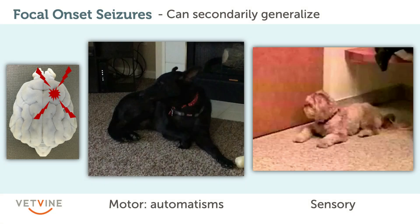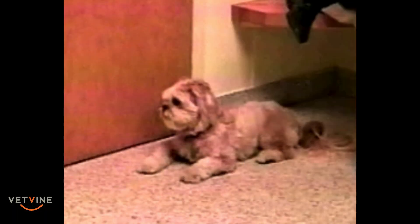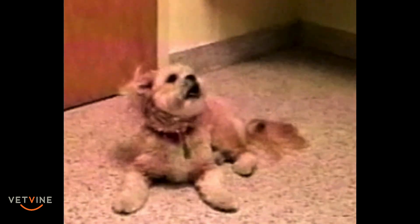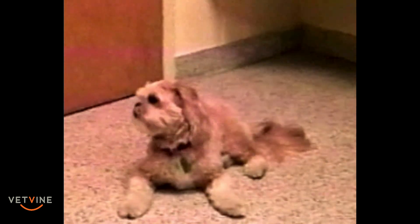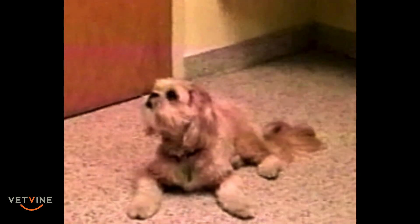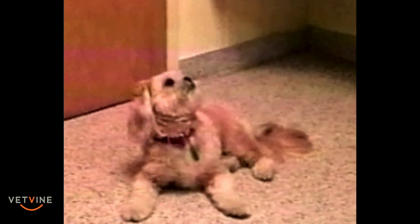This is what we would consider a sensory seizure. This animal we believe is having episodes perhaps because it's experiencing visual hallucinations — this is a typical fly-biter. Fly-biting behavior can be a behavioral abnormality, but it can also be a manifestation of a seizure. In this animal it was confirmed with EEG that it was seizure activity, and we believe these episodes are caused by abnormal sensations making the dog feel like it's seeing something in its vision that it's subsequently chasing.